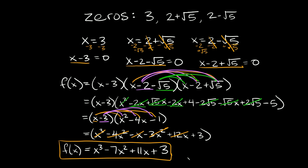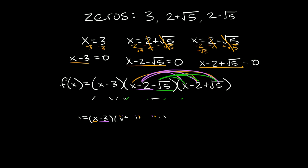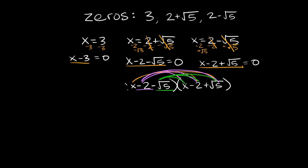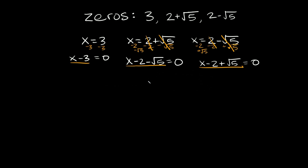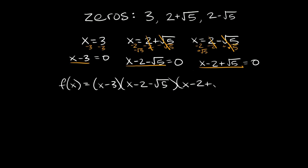Now let me quickly show you what we would have done differently using the grouping method. The big first step is basically the same for both methods — finding your factors. So again, f(x) equals (x minus three)(x minus two minus the square root of five)(x minus two plus the square root of five). The extra thing with grouping is that you notice you have x minus two appearing in both irrational factors, so you can treat those as a single grouped term to cut down on the distributing.